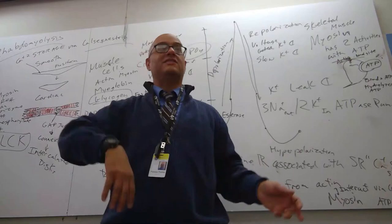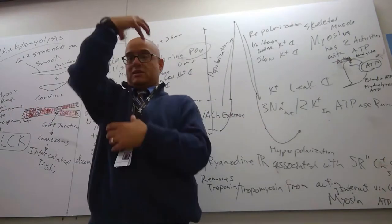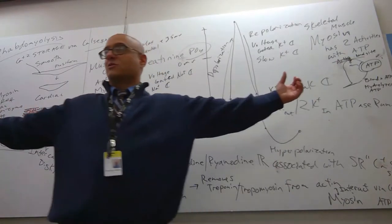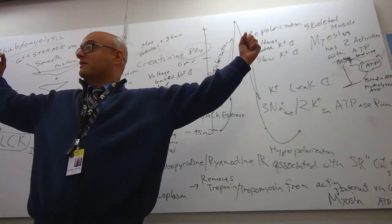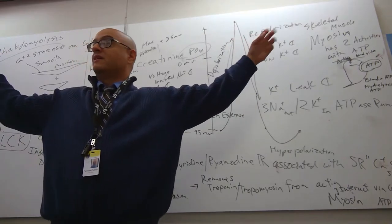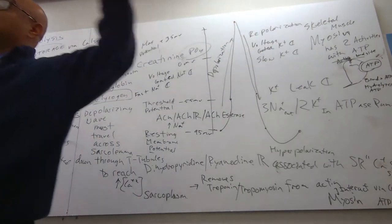The light chain is connected to the heavy chain. The heavy chains are what make the M line. The light chains are what make the heads that reach up to grab actin. Any questions?